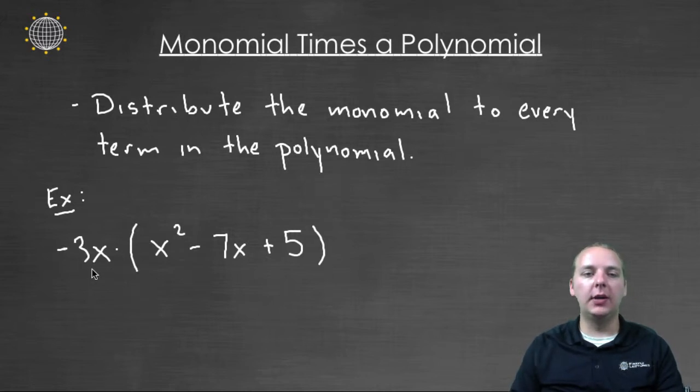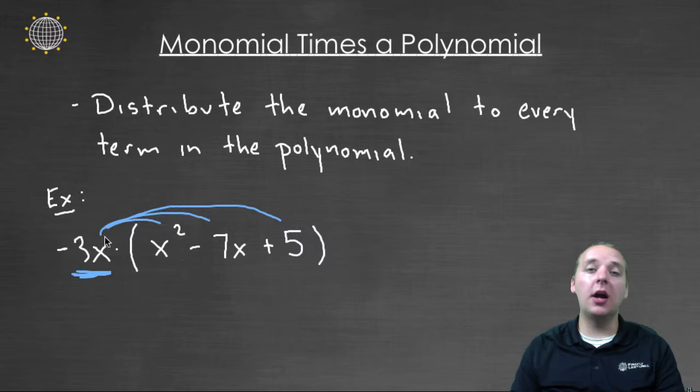For example, if you had negative 3x times the polynomial x² minus 7x plus 5, what we're going to do is we're going to take the minus 3x, the monomial, and distribute it to every term in the polynomial. And just because this is exactly what we would do if it was a constant times a polynomial, we'd use the distributive property. And we can do the same thing even if we have a monomial.